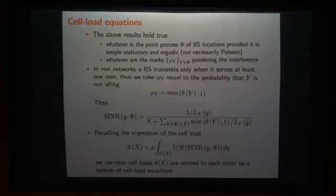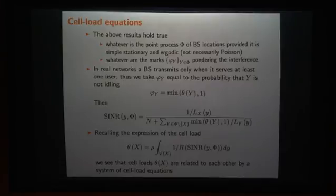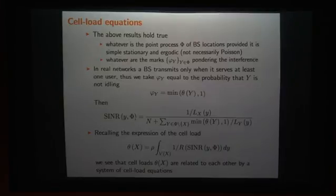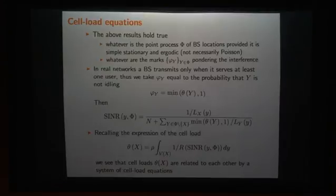These results hold for any point process of base stations — not necessarily Poisson — and for any marks phi_Y pondering the interference, provided they follow the stationarity of the point process. When we model reality, a base station transmits only when there is at least one user, so it is natural to take phi_Y as the probability that the base station is not idling, which equals the minimum of its load and one. Substituting the SINR expression into the cell load formula reveals that the cell loads are coupled by a nonlinear system of equations, which we call the cell load equations. Solving this system gives the load of each base station in the network.